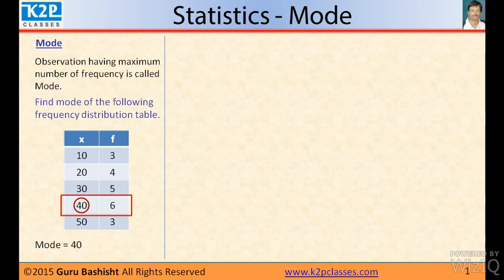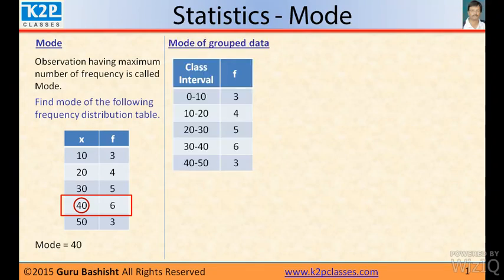Now we will learn how to calculate mode by graphical method. Mode of a group data. The class interval is 0 to 10, frequency is 3, 10 to 20 is 4, 20 to 30 is 5, 30 to 40 is 6, and 40 to 50 is 3. By seeing this, we can say that mode class is 30 to 40 because it has the maximum frequency, that is 6.